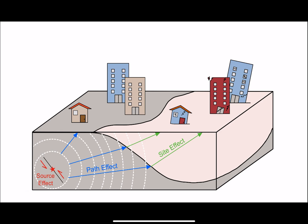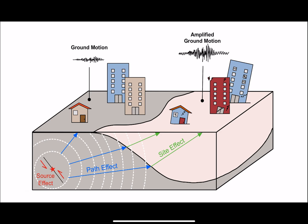Different types of soils can amplify or de-amplify seismic waves from earthquakes. The amount of amplification can depend on the stiffness of the soil, which is measured by its shear wave velocity (Vs). Shear waves generated by the earthquake pass through stiffer soils faster than through softer soils, and thus stiffer soils have a higher shear wave velocity.